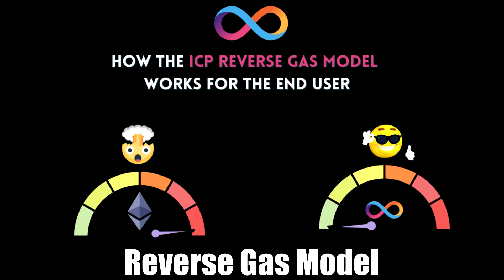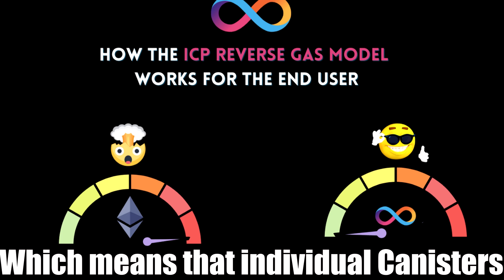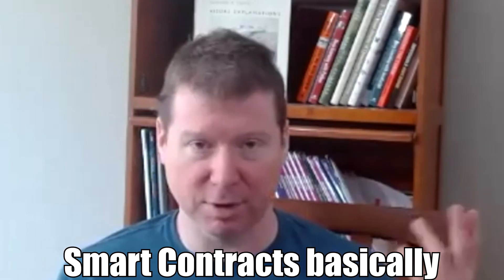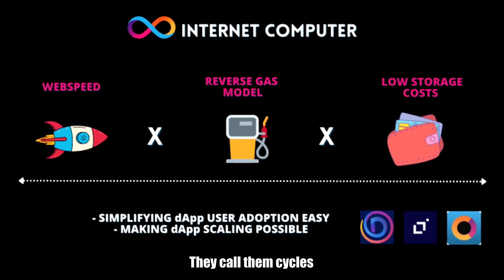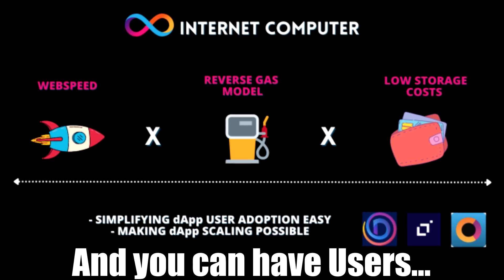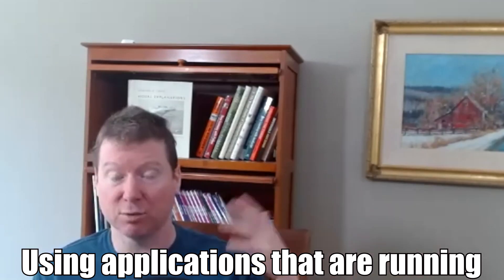And in fact, they use something called a reverse gas model, which means that the individual canisters, the smart contracts basically, are the ones that are holding on to the gas. They call them cycles. And you can have users using applications that are running on IC without having them have to be onboarded or pay gas at all.